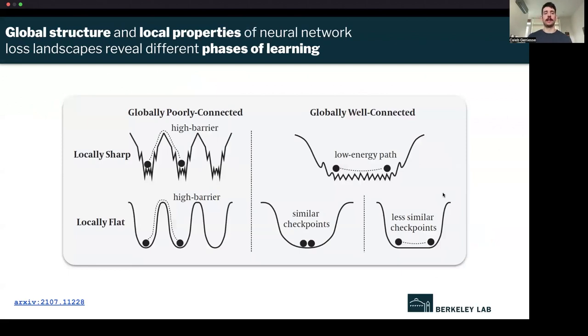More recently, our group has started trying to combine global structure and local properties of neural network loss landscapes to reveal different phases of learning. We separated this into globally well-connected and globally poor-connected and local aspects of loss landscape, like the sharpness or flatness. This breaks down into four different groups. You can further subdivide the last group based on how similar different checkpoints are. This gives us prototypical models that we might expect to see in a loss function, and it goes beyond the local loss landscape that we just talked about.